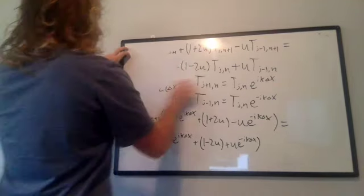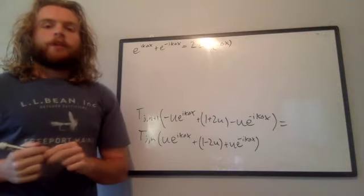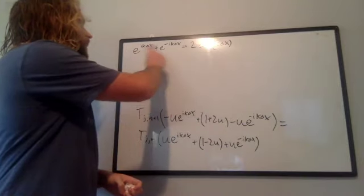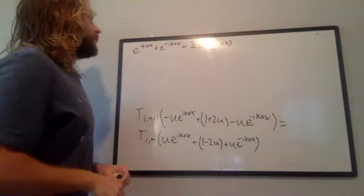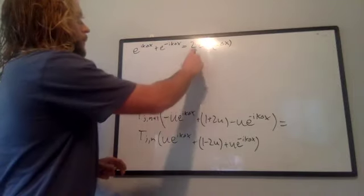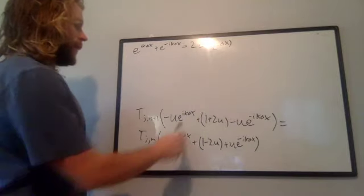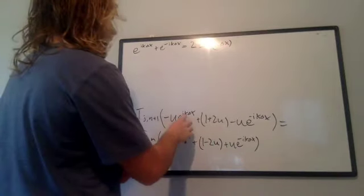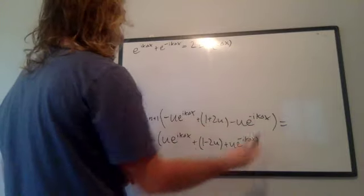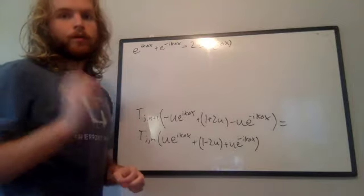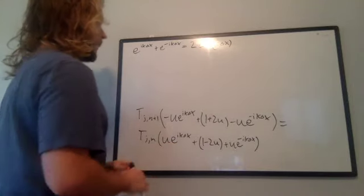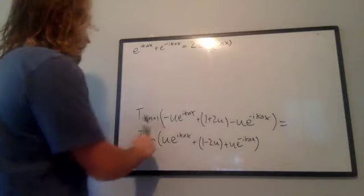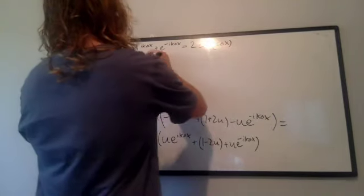The next step is applying Euler's law. From previous videos, when you have exponentials e^(iKΔx) and e^(-iKΔx) — one positive, one negative — added together, that gives 2·cos(KΔx). Both parentheses on each side have exactly this scenario. We also divide both sides by the left-side bracket to isolate T, J, N+1 by itself.